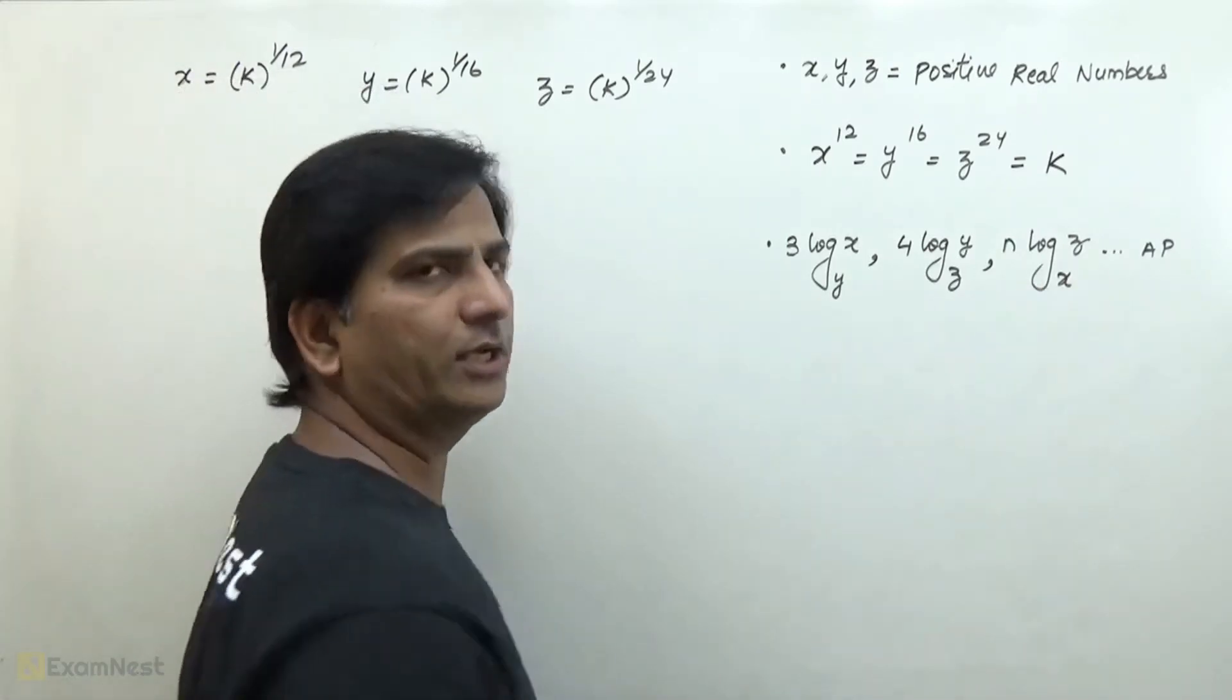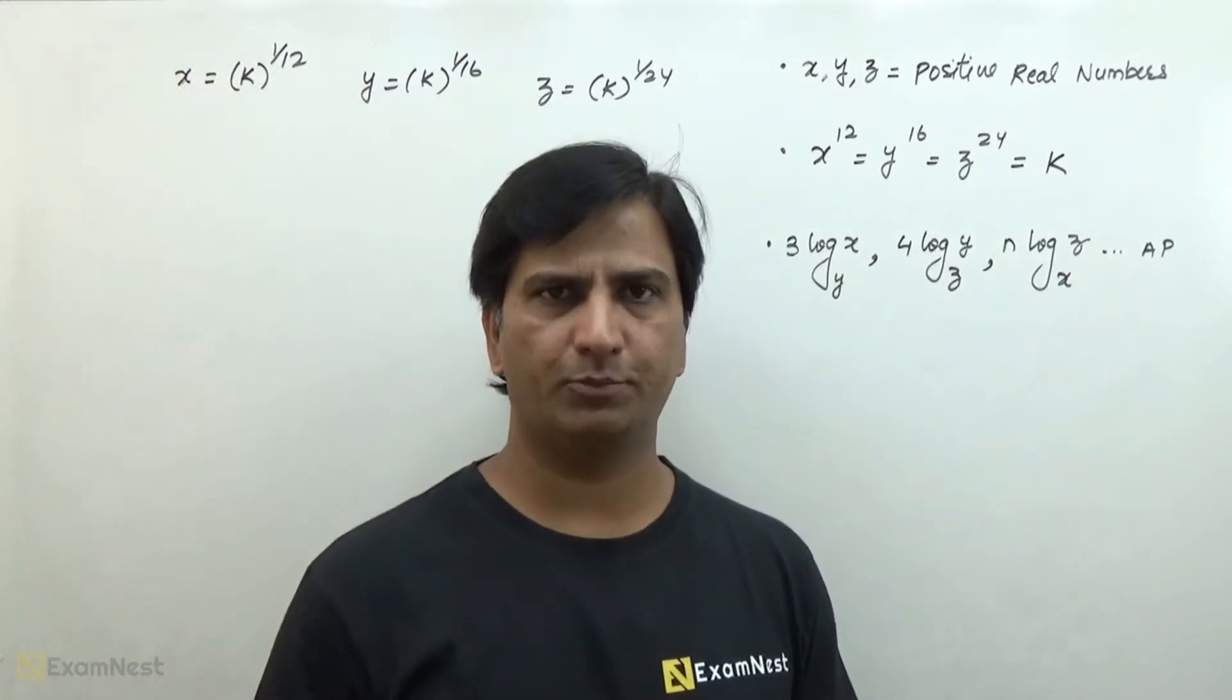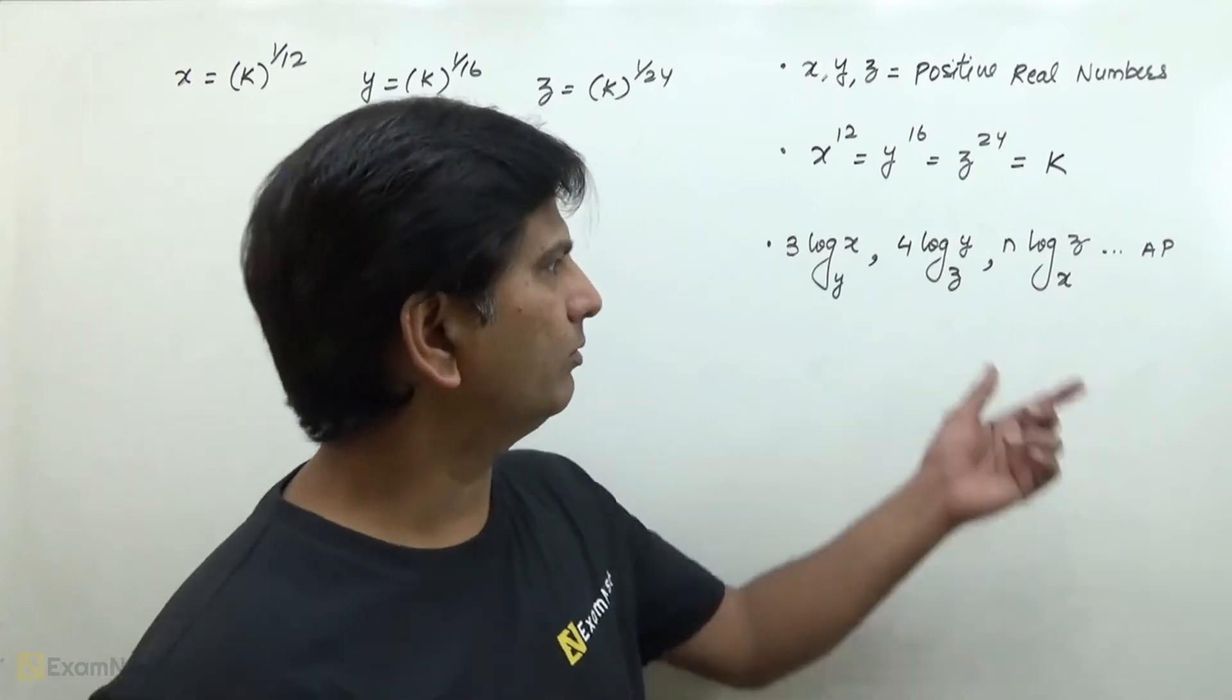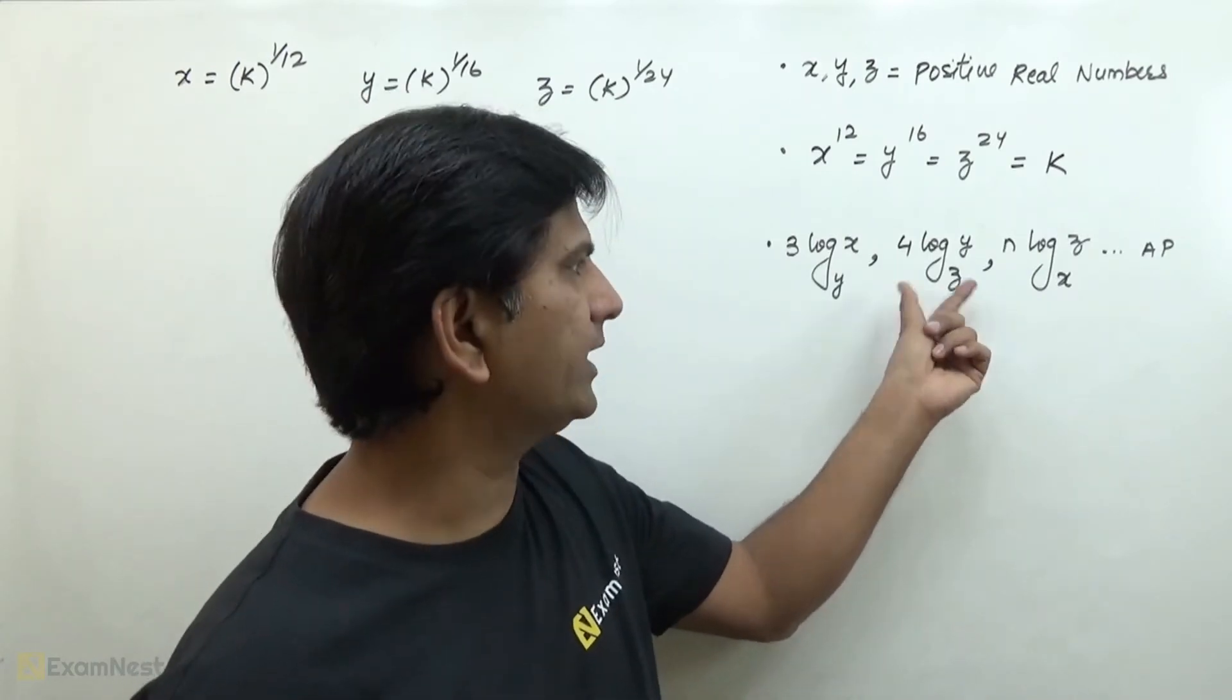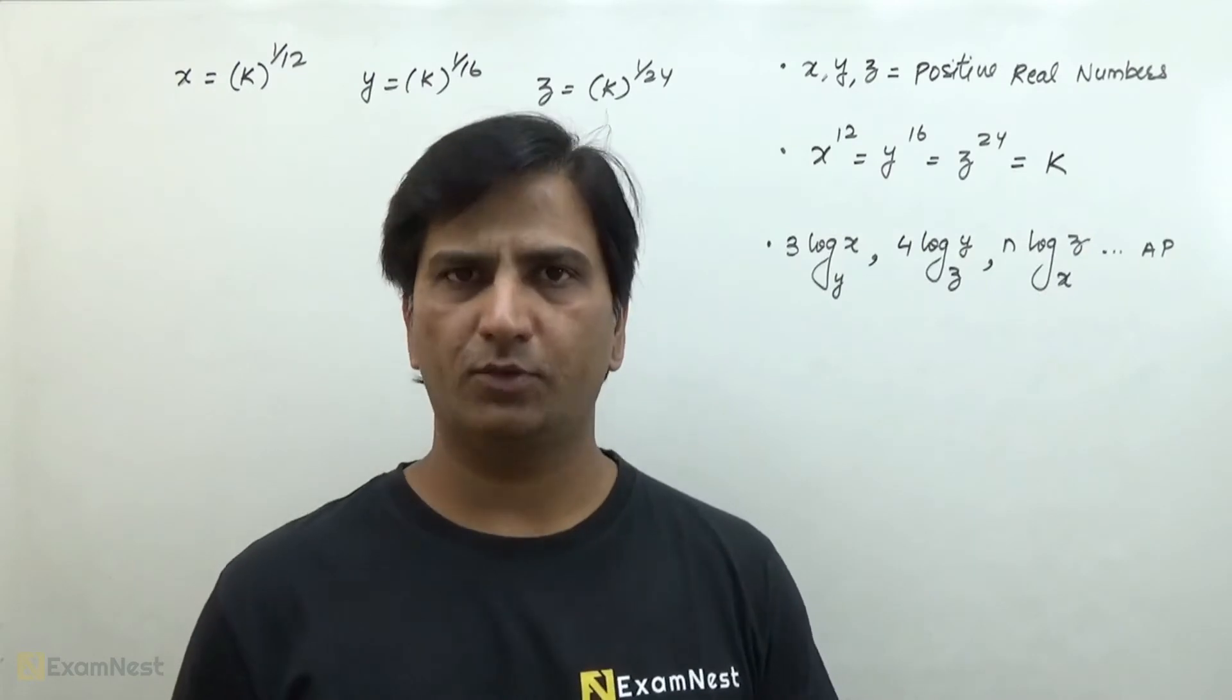These three are in arithmetic progression. When we have three terms, if we double the middle term, it equals the sum of the other two terms.